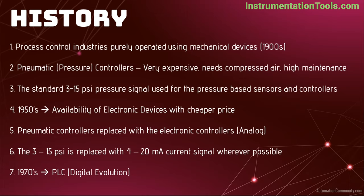Pneumatic devices are bulkier, need compressed air for operation, have higher maintenance costs, and take more time for troubleshooting and repair. In the 1950s, with the evolution of electronics, the analog transmitters started replacing the pneumatic transmitters. The analog transmitters generate an output signal in the range of 4 to 20 mA. The 4 to 20 mA signals solve many issues and provide simple installation and configuration of field instruments. During the 1970s, the evolution of digital systems started with the introduction of programmable logic controllers, PLC.